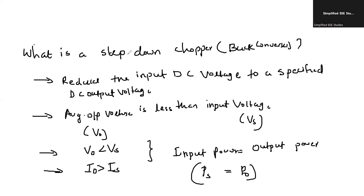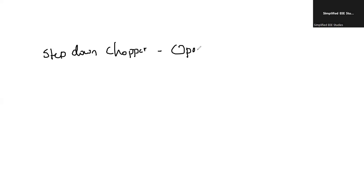It is mainly applicable in the case of speed control of motor. You can use the step-down chopper, and also you can use it inside a battery charge controller. These are the major applications. Now, let us discuss the basic operation of the DC-DC chopper, the buck converter — step-down chopper operation.